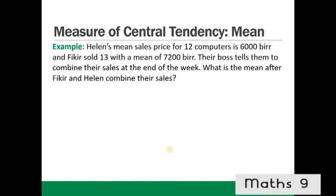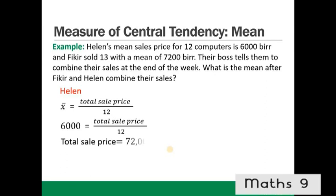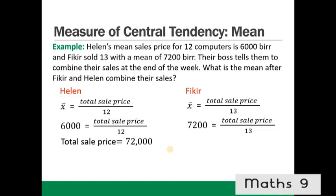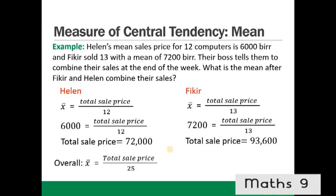Another example: Helen's mean sales price for 12 computers is 6,000 birr, so total = 72,000. Fakir sold 13 with a mean of 7,200 birr, so total = 93,600. Combined mean = (72,000 + 93,600) / 25 = 6,624 birr.